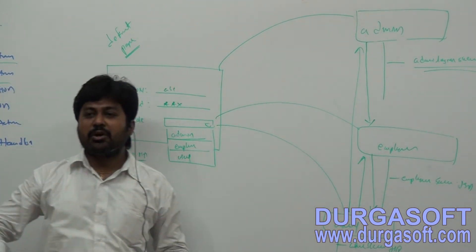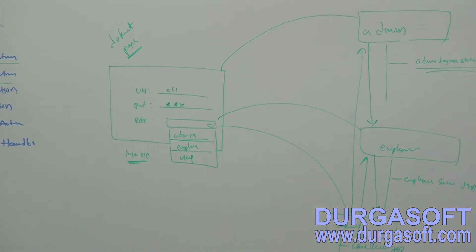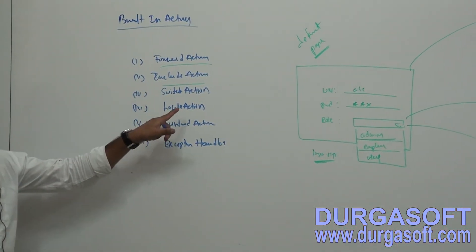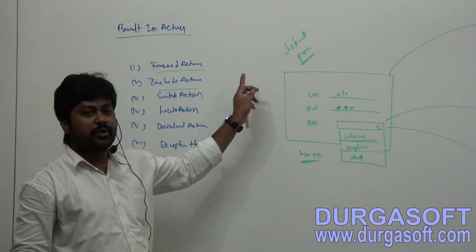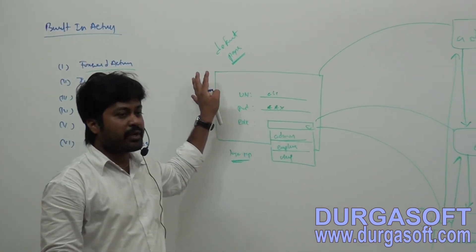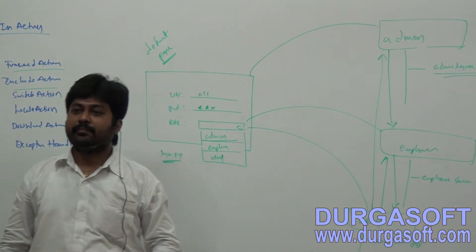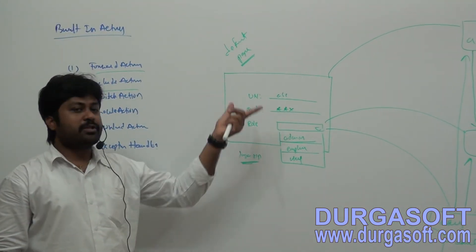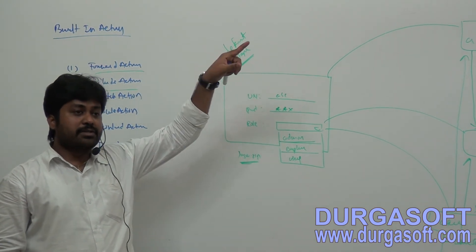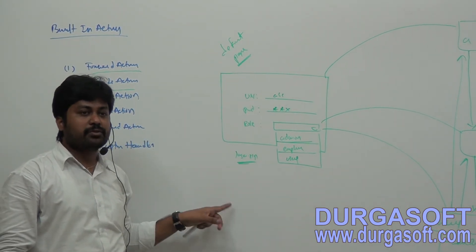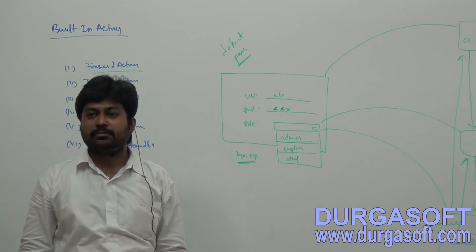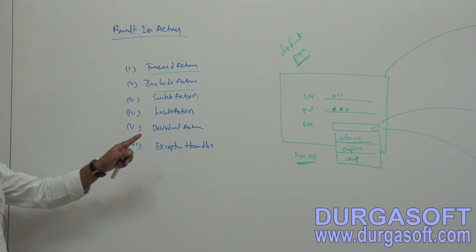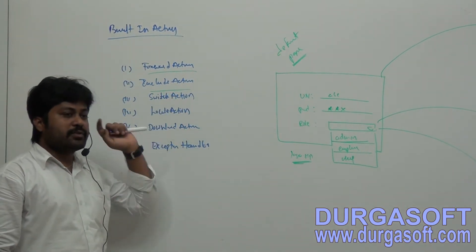This type of module-to-module communication can be done using SwitchAction. If instead you try a direct forward request across modules, you will get an exception — because all required admin configurations will be searched under the default XML file, so the admin module cannot be executed. For multiple modules, you must use SwitchAction to switch from one module to another.